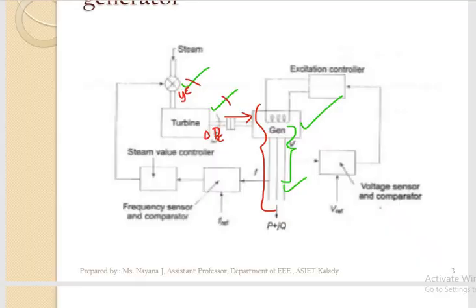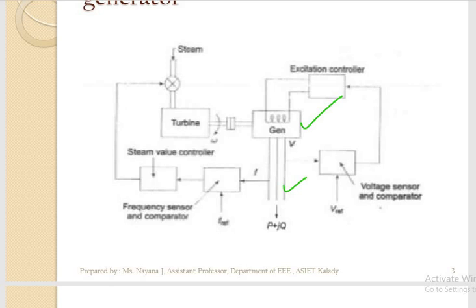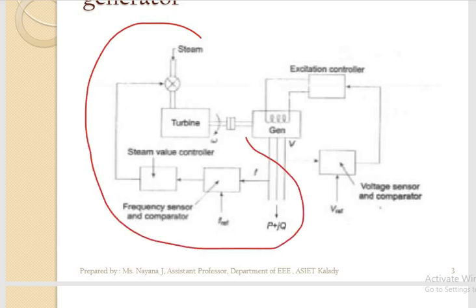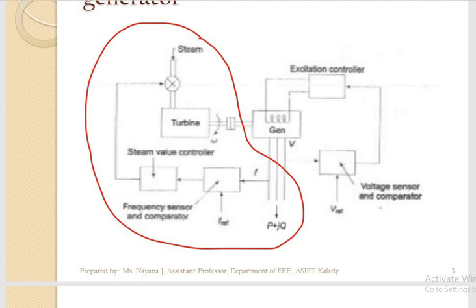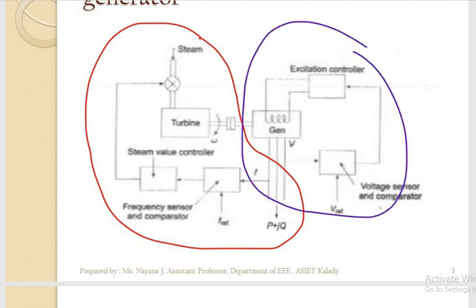Before moving to that, let's recall what we discussed in Load Frequency Control and see which parts we require in this voltage control. So far we discussed the frequency part in load frequency control. Now today we will be discussing the main part of voltage control - how this output voltage is being controlled. The output voltage of the generator can be controlled by controlling the excitation of the generator.